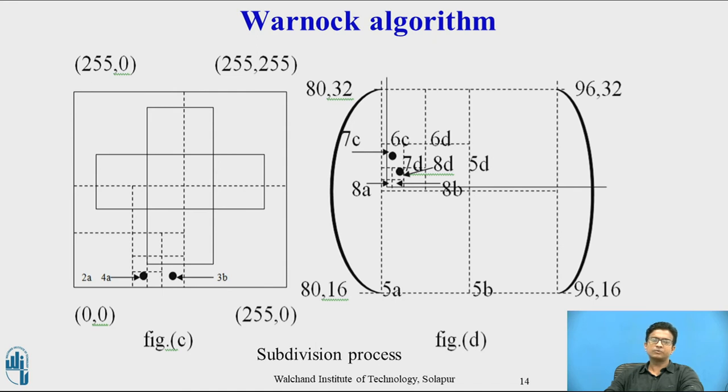In this first window you can see, again this first window is divided into four parts so that you will get 2A, 2B, 2C, and 2D. Again, this 2A is divided into four parts so that you will get 3A, 3B, 3C, and 3D. Again, this window is divided so that we can get the object to be resolved, so that we can get a simple solution for this object, so that we can decide which object is above and which object is below. Again, this 3A is divided into four parts so that we will get 4A, 4B, 4C, and 4D.